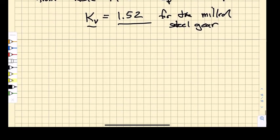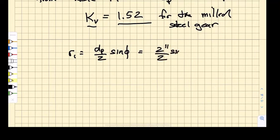The other thing that we need to do is we need to figure out what R1 is, which is the pinion diameter divided by two times the sine of the pressure angle. Well, the pinion diameter is two inches. We divide that by two, we get one times the sine of 20 degree pressure angle, which is 0.342.